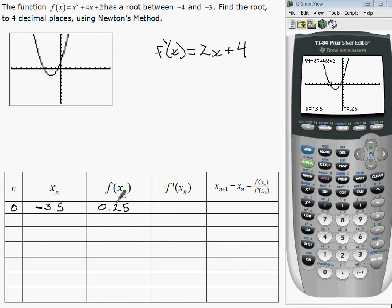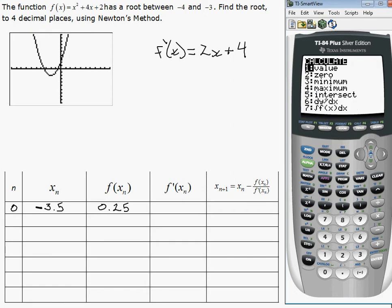Then we want to calculate the derivative at negative 3.5, and we can use our calculator for that too. Second, calculate the derivative as number 6 here, 6, at negative 3.5.